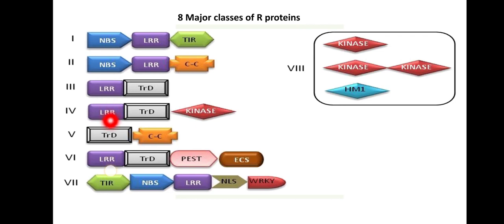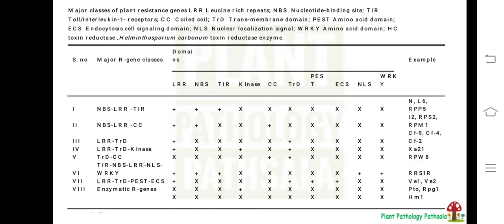Let's discuss all these gene classes one by one with examples. The first class is NBS-LRR-TIR. NBS means nuclear binding site, with a C-terminal leucine rich repeat (LRR region), and in addition to this a TIR domain — homology to the mammalian Toll/interleukin-1 receptor. Examples of this type of resistance gene are N, L6, and RPP5. N is a resistance gene present in tobacco, L6 is a resistance gene present in flax or linseed, and RPP5 is a resistance gene present in Arabidopsis.